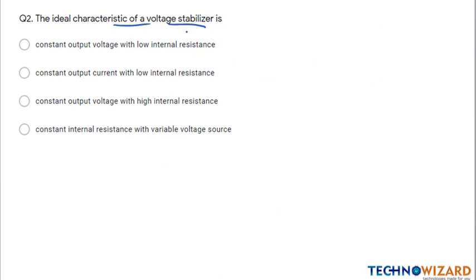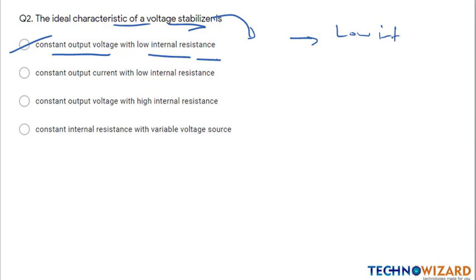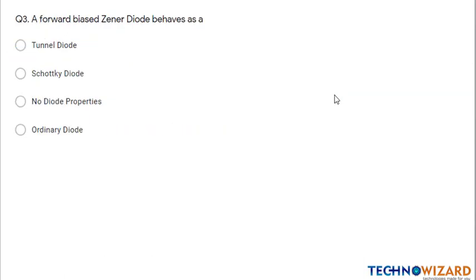Question number two: the ideal characteristic of a voltage stabilizer is that it will produce a constant output voltage with low internal impedance. A stabilizer always produces a constant output voltage if and only if it has low internal impedance or no internal resistance. You have to remember this.